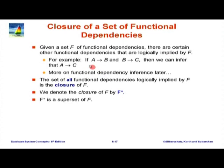Take this very simple case. There I said instructor ID determines department, department determines building. So A determines B, B determines C. From this, we can infer A determines C, because if any two tuples have the same instructor ID, they must have the same department. And because given a department the building is unique, they must have the same building. So logically we can infer that A also functionally determines C.